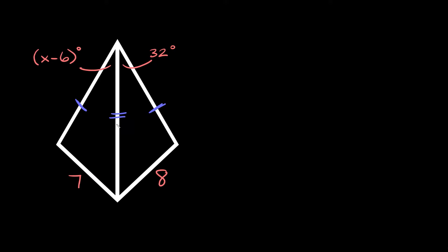We have our two congruent sides on each triangle and we also have the angle between these two congruent sides. These two congruent sides meet at this corner, so we have the angle right here, and same thing on this side — we have the angle between those two congruent sides right there. Now this angle is 32 degrees and it opens up to this length over here that is 8 units long.